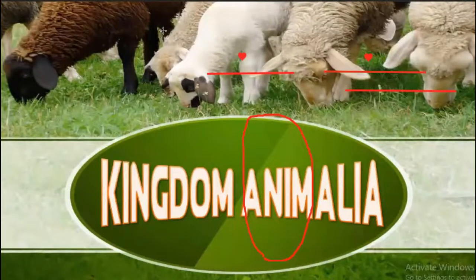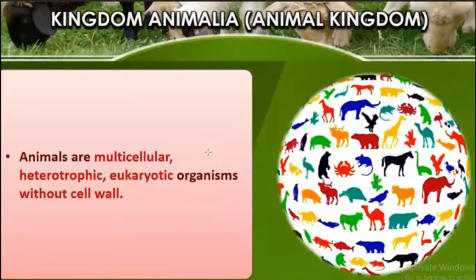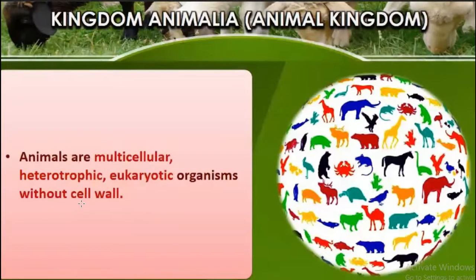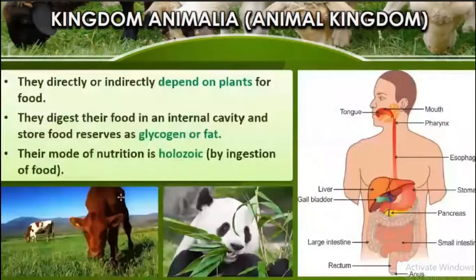Next is Kingdom Animalia. Animals are multicellular, heterotrophic, eukaryotic organisms without a cell wall. In your lower grade you studied the differences between plant cells and animal cells — animal cells do not possess a cell wall, which was one of the important differences between plant and animal cells.